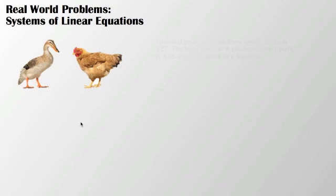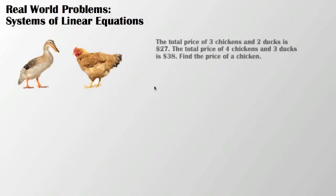So what we're going to do today is take a look at two examples involving word problems. Here's the first one. The total price of three chickens and two ducks is $27. The total price of four chickens and three ducks is $38. Find the price of a chicken.